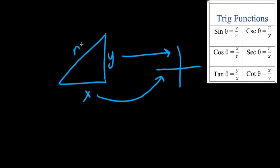Similarly, the secant of an unknown angle, which is the reciprocal of cosine, will be found with r divided by x. Finally, the cotangent of an unknown angle, which is the reciprocal of tangent, will be found with x divided by y.